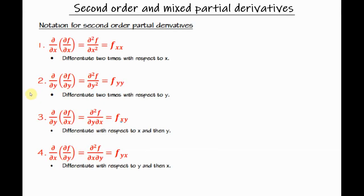Welcome everyone. Here is a video with a brief explanation of second order partial derivatives with one example. If a function has several variables, we can find higher order partial derivatives of that function. The second order partial derivatives are built on the first order derivatives, meaning the second derivative is defined as a derivative of the first derivative.